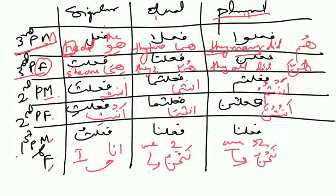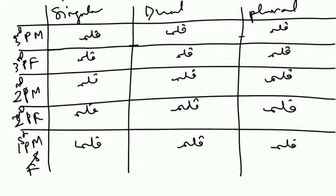So Alhamdulillah, we have seen the examples of the detached form, that is Munfasil Zamaayr. Nahnu is called a Munfasil Zamaayr, and Munfasil Zamaayr is also called the detached form.